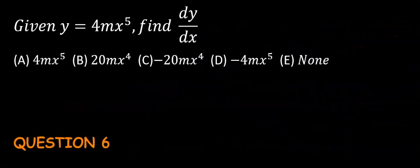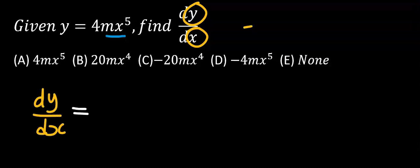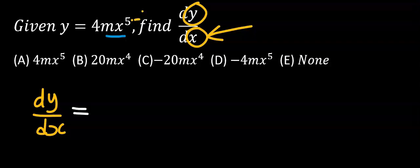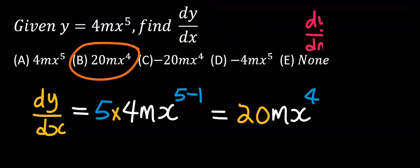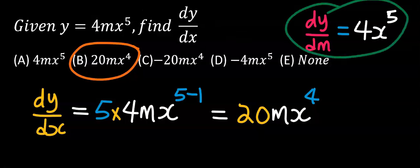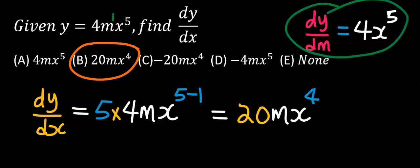Next, we are going to differentiate y but respect only x. In this function, m is multiplying x — because it is multiplying with x, I am not going to remove the m from the function. Since I am differentiating with respect to x, only the power of x subtracts 1, and the 5 comes down according to the general rule. Our answer is option B. Note that dy/dm of this function would give 4x to the power of 5, because differentiating m gives 1.